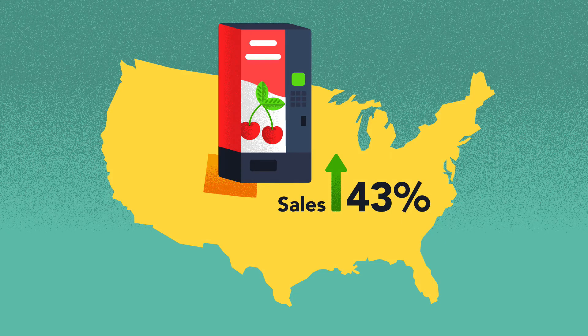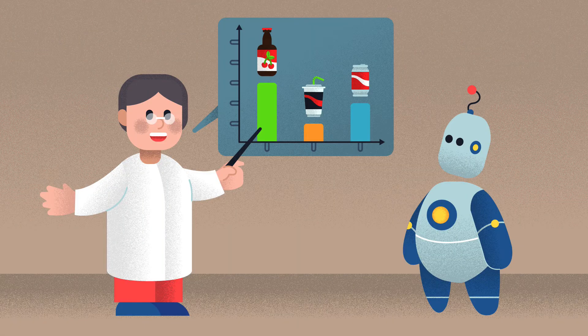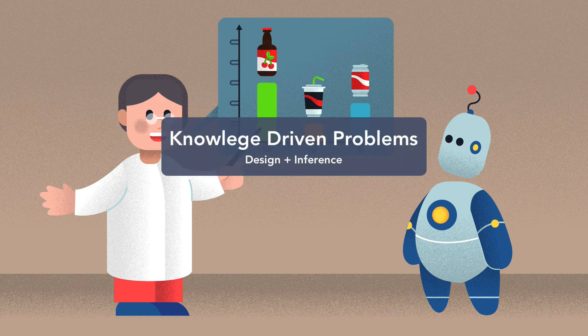For example, if you want to forecast how a new type of beverage dispenser would affect sales in a region, that's a principle-driven problem. If you want to forecast how a new type of packaging would affect product sales in a region, that's a knowledge-driven problem. Knowledge-driven problems tend to involve phases one and three.